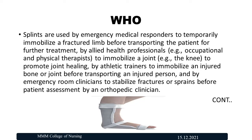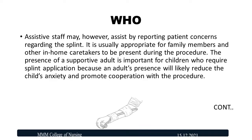The splint is used by emergency medical respondents to temporarily immobilize a fractured limb before transporting the patient for further treatment, and to immobilize the joint and promote joint healing. Athletic trainers use it to immobilize an injured bone or joint before transport. Emergency room clinicians use it to stabilize fractures and sprains before assessment by an orthopedic clinician. Family members or caregivers may be present during the procedure, which is especially important for children to reduce anxiety.